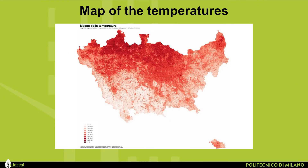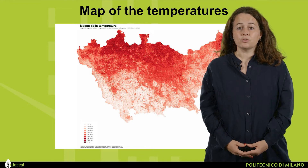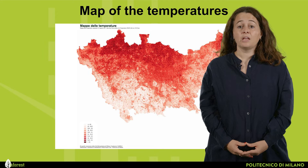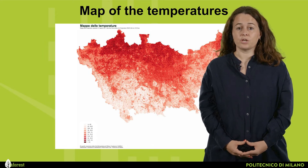The second element regards temperatures, to understand which areas are more vulnerable to the urban heat island effect. This map shows the temperature on the 4th of August 2017 during the day. Red areas are the ones where trees are mostly needed, but the expectation is that there will be little available land to be planted, and a lot of effort is required to provide effective change.